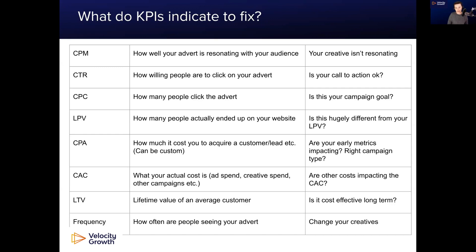For LPV, check how different it is from your link clicks. A drop-off is normal — if you have 1,000 link clicks and about 500 landing page views, that's actually pretty normal due to bounce and accidental clicks. But if you're seeing 1,000 link clicks and only 200-300 landing page views, there might be a loading time issue or landing page issues. For CPA, check whether your early metrics are impacting it, and whether you have the right campaign type and structure — you need the right campaign structure aligned with your goal.